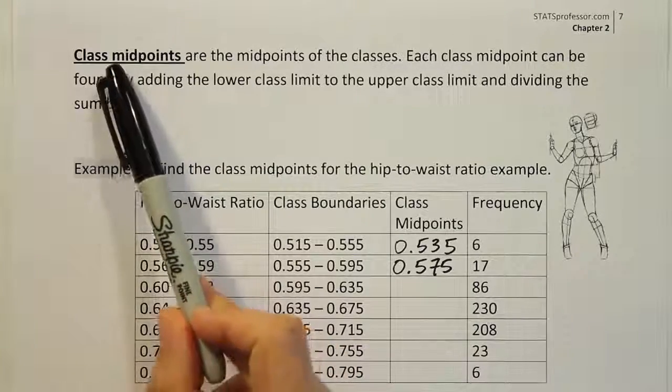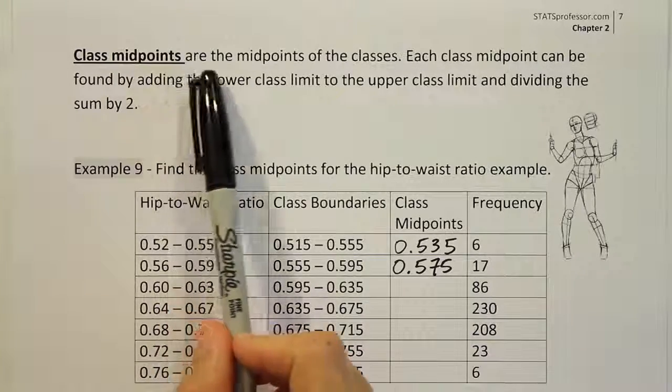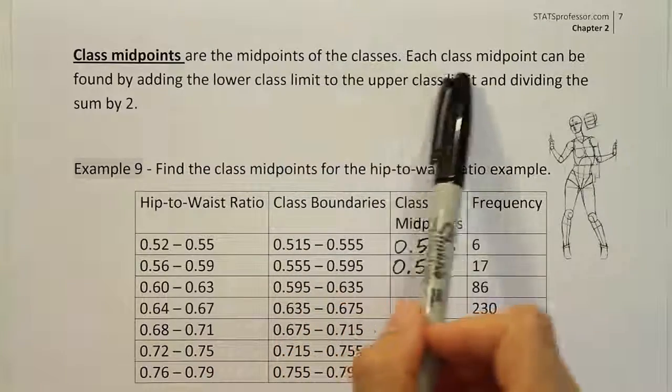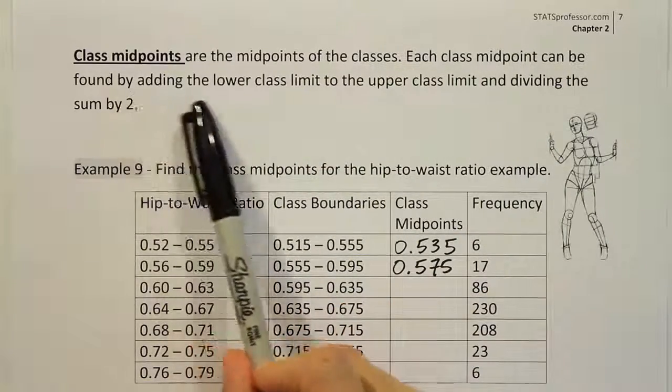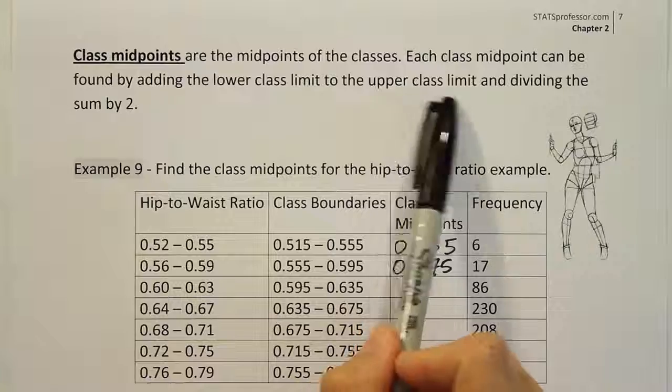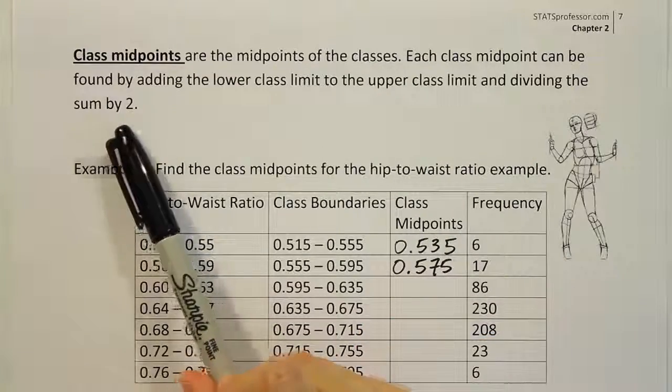Okay, so in this problem we're finding the class midpoints. Class midpoints are the midpoints of the classes. Each class midpoint can be found by adding the lower class limit to the upper class limit and dividing the sum by 2.